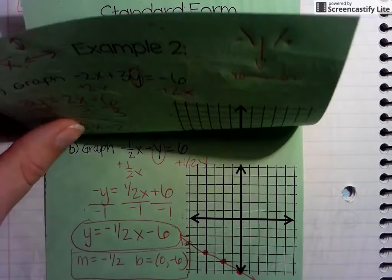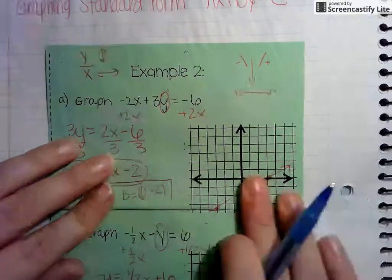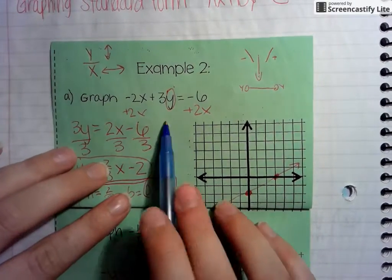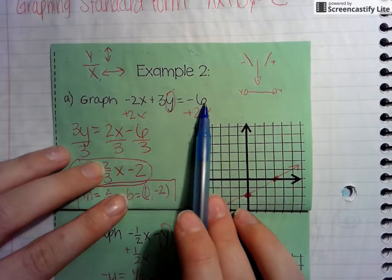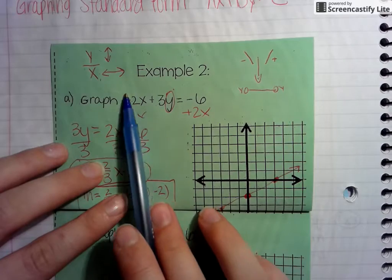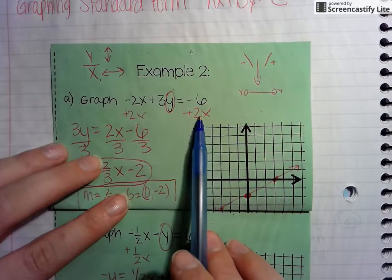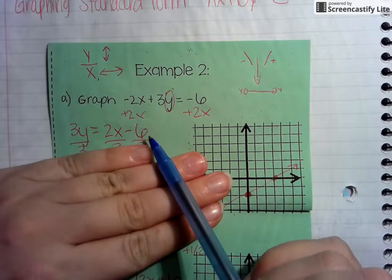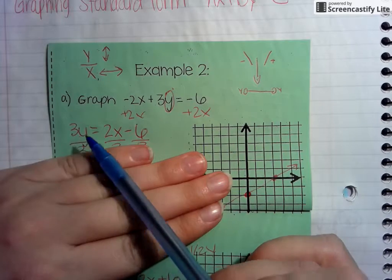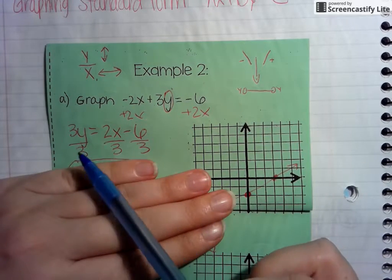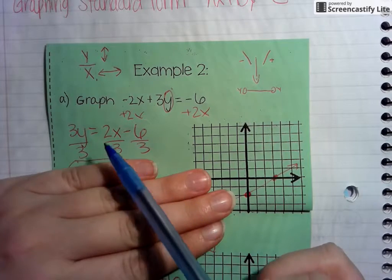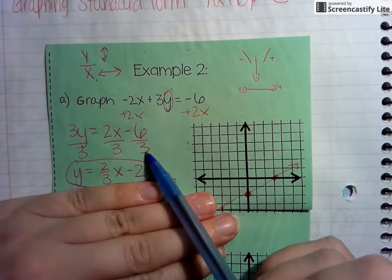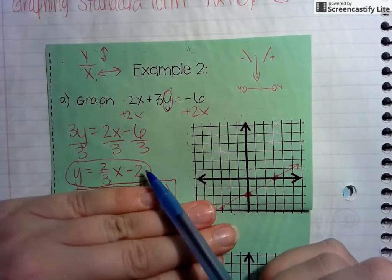When graphing a linear equation in standard form, you always want to first get y by itself. So we have negative 2x plus 3y equals negative 6. Because this is a negative 2x and we want to get y by itself, we're going to add 2x on both sides. So we're left with 3y equals 2x minus 6. We want to get y by itself, so we divide both sides by 3 — dividing each term. So 2 divided by 3 gives us 2/3 x, and negative 6 divided by 3 gives us negative 2.